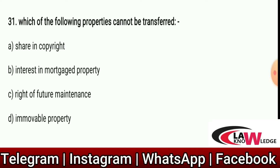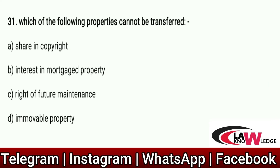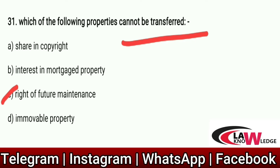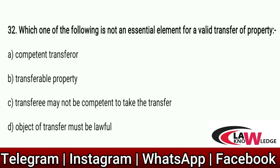Q31: Which of the following properties cannot be transferred? Option A: Share and Copyright. Option B: Interest in Mortgage Property. Option C: Right of Future Maintenance. Option D: Immovable Property. Correct answer is C — Right of Future Maintenance. This cannot be transferred.